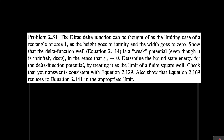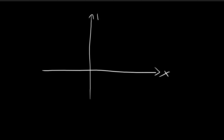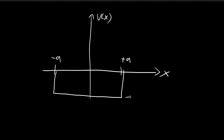In this problem, we want to show that the Dirac delta potential is actually just a limiting case of the finite square well. Recall that for the finite square well, we have a setup that goes from negative A to positive A, with a well of depth V0. For the Dirac delta potential, we have this infinitely sharp spike.